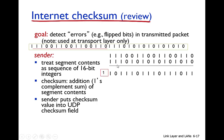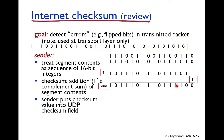The 16-bit values are added using binary addition. If there is a carry, that carry is also added back in. After computing the sum of the 16-bit integers, we take the one's complement of that sum. The one's complement of the sum becomes the checksum value.